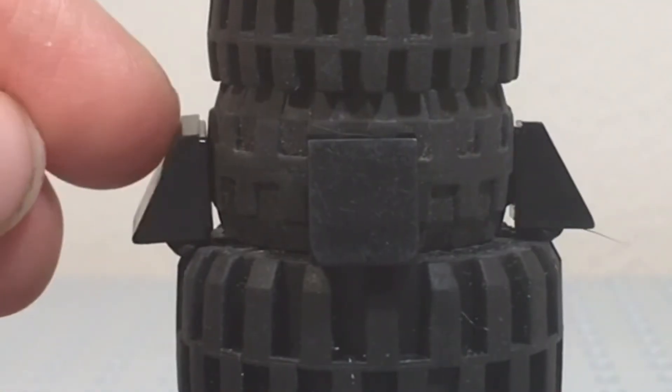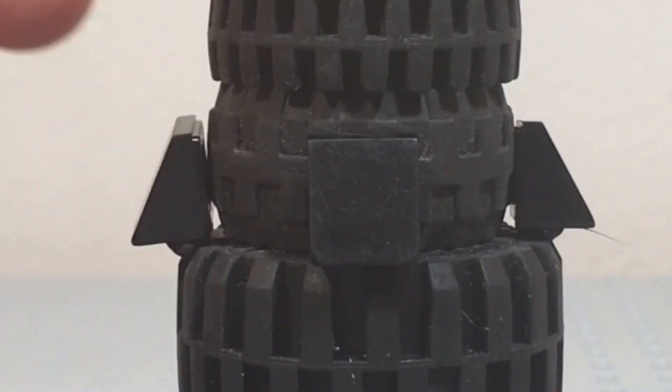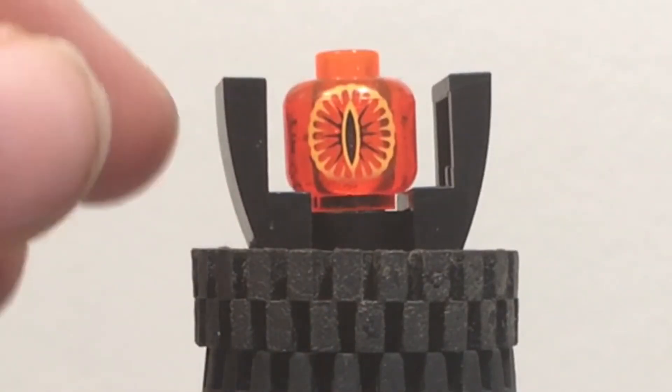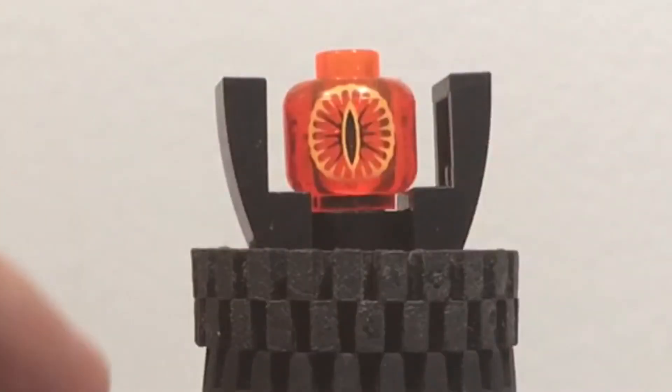And then these, just to add a little bit more detail, these are stuck on with clay, the cheese slopes. And then these slope pieces are jammed into the tire, so that's of course another illegal building technique.